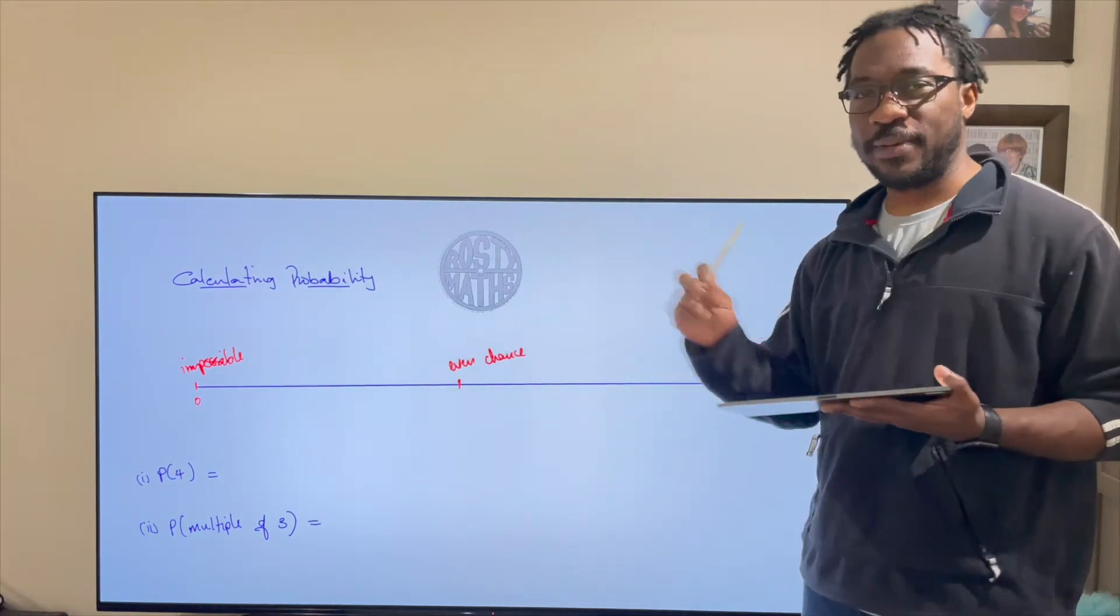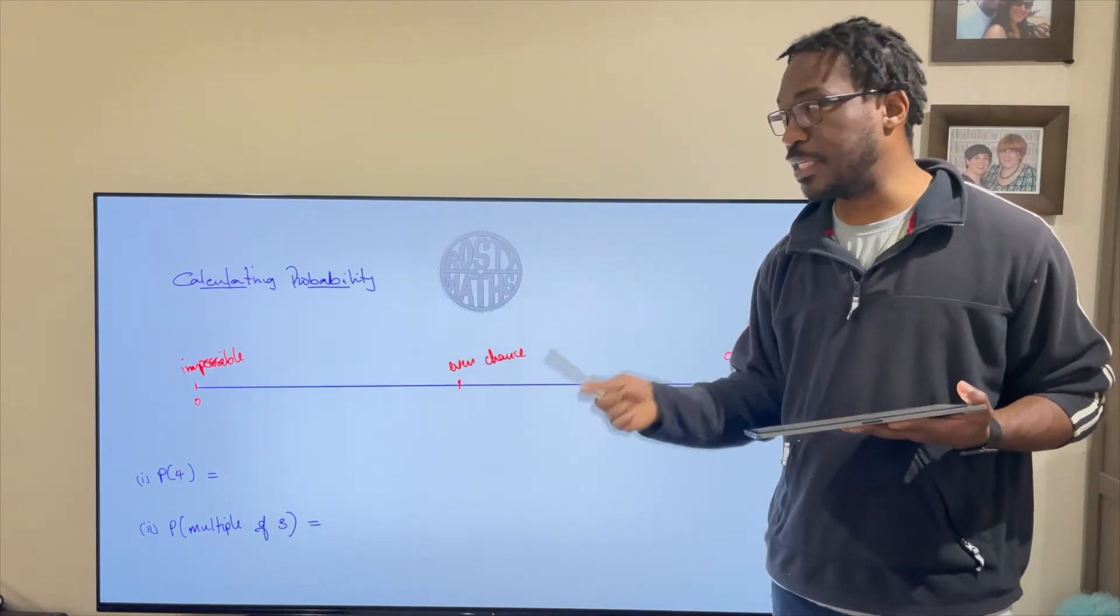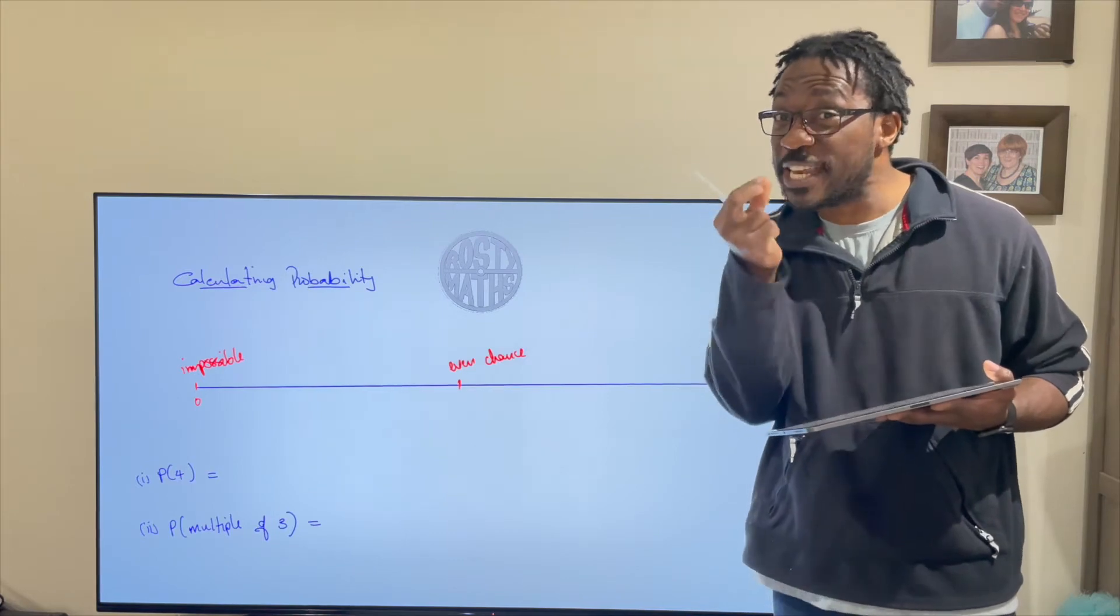Now here in the big bad world of secondary school we do not use that kind of language because we need to be able to calculate probability which means we need to come with numbers.